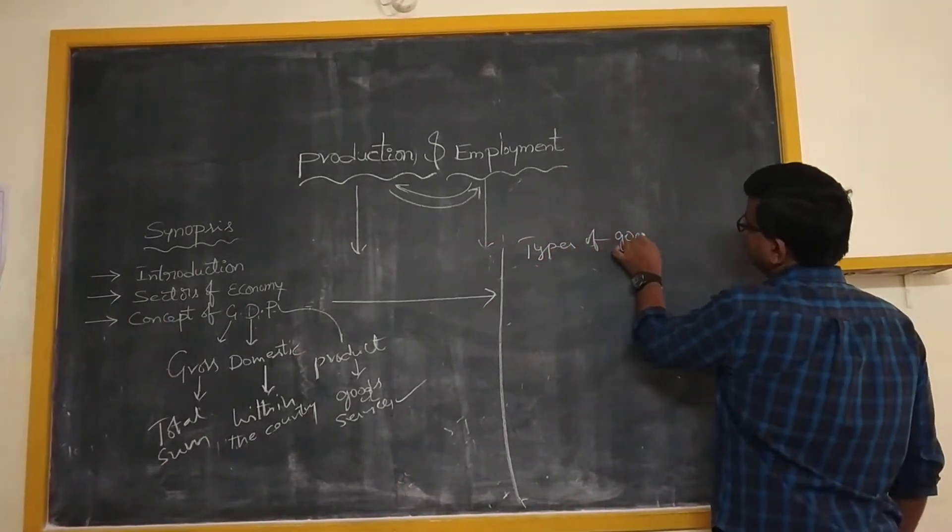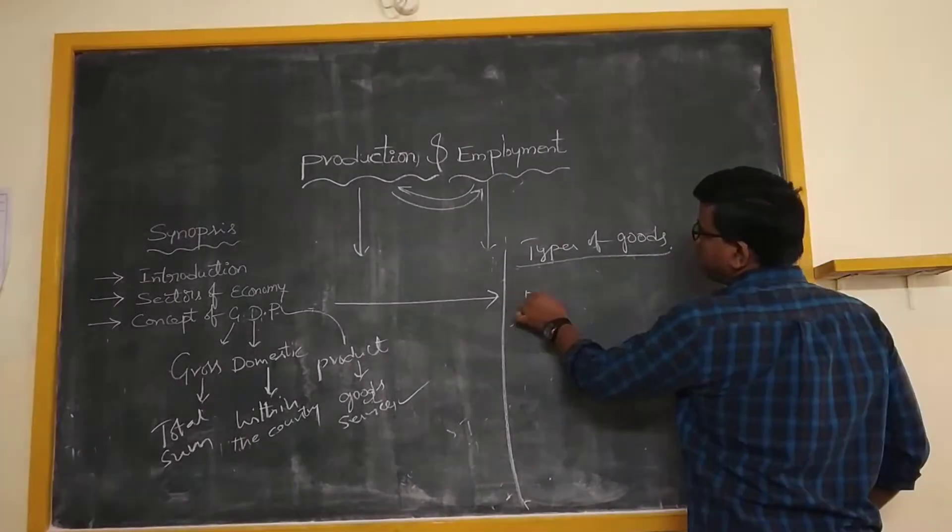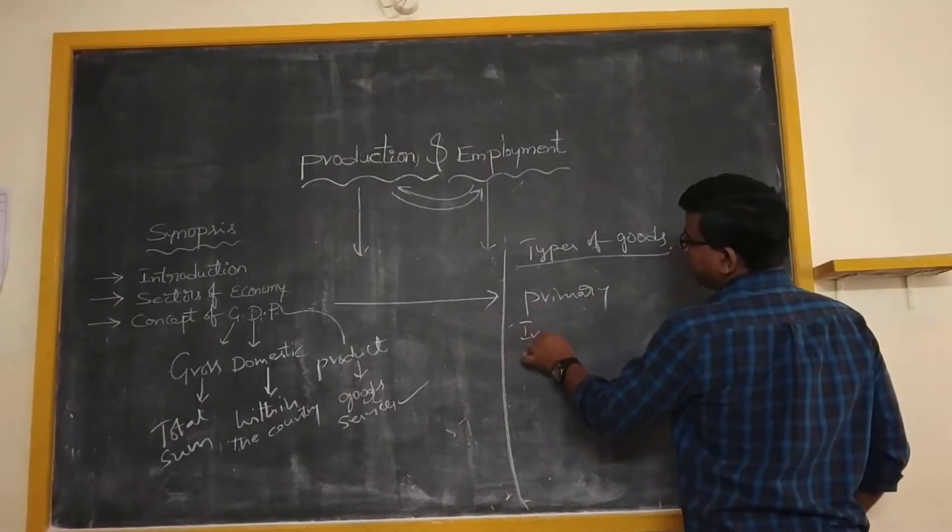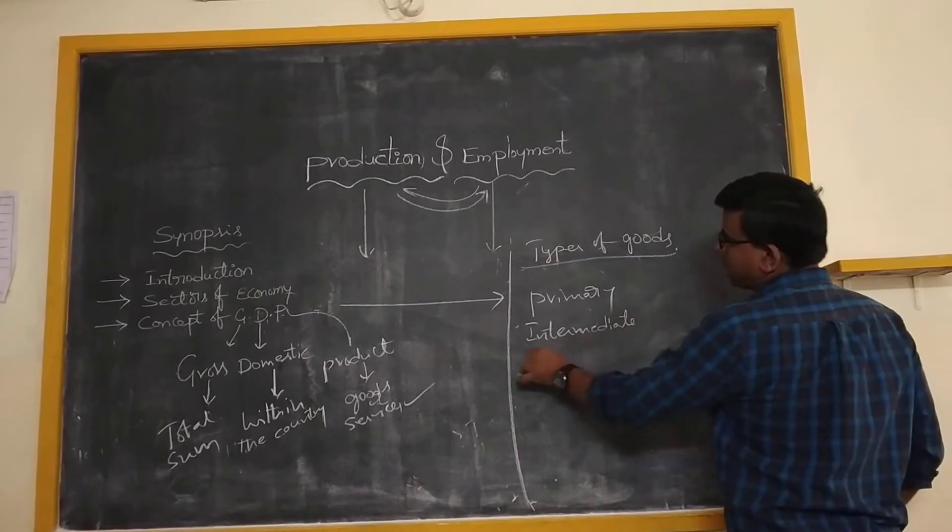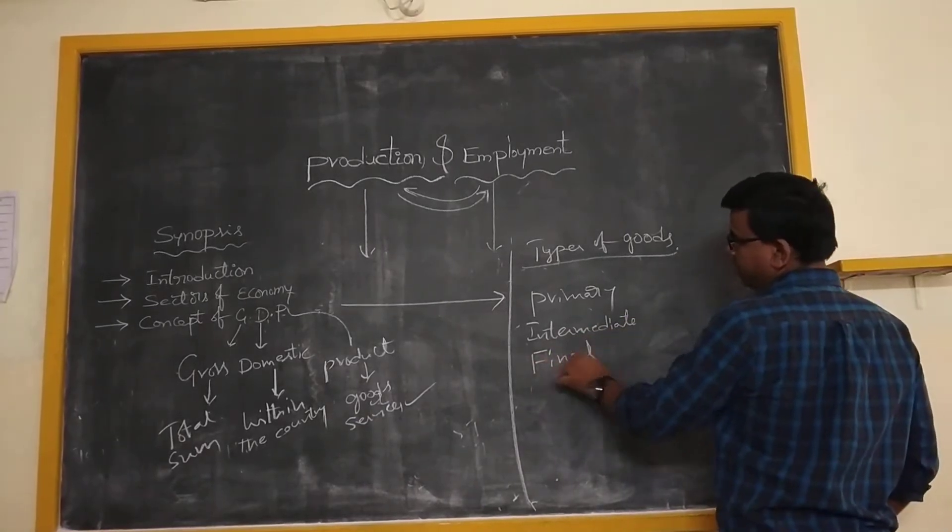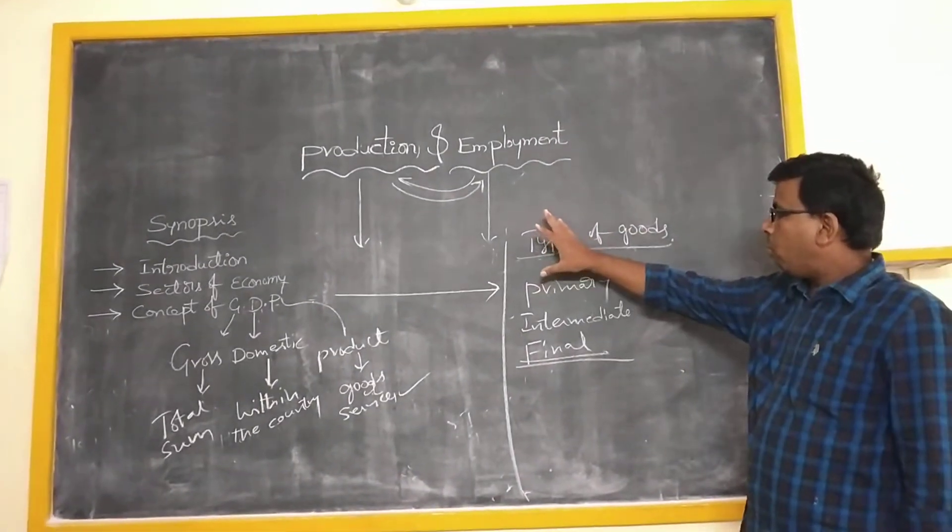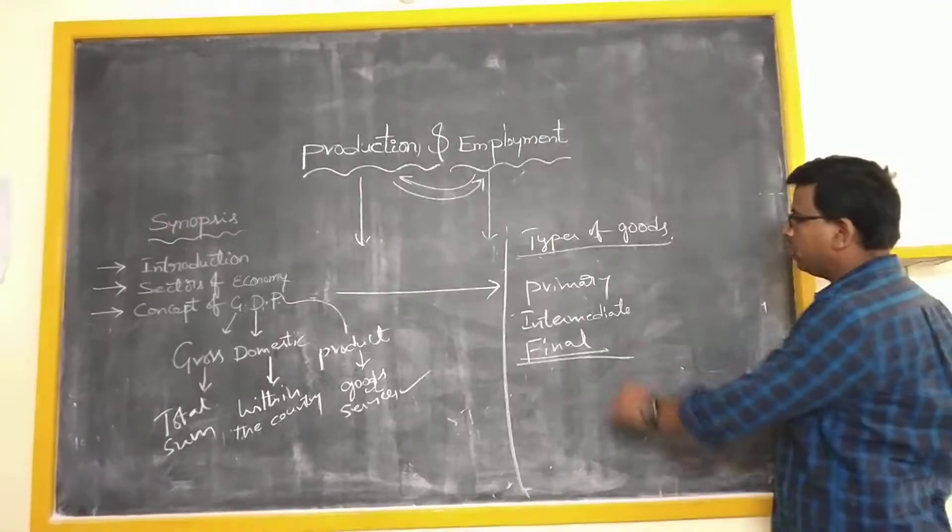So what are the different types of goods? Types of goods are primary goods, intermediate goods, and final goods. This is the term I used. So what is the difference between these primary, intermediate, and final goods?